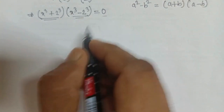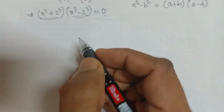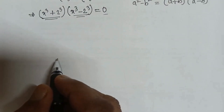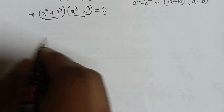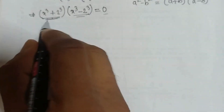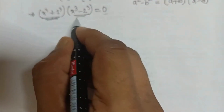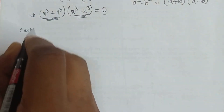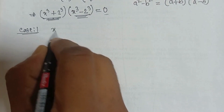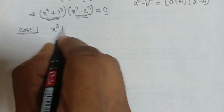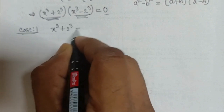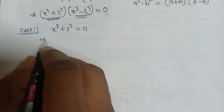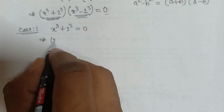We are getting two expressions as a product equal to 0. We know if the product of two expressions is 0, then either one should be 0. For case 1, we take x cubed plus 2 cubed equals 0.